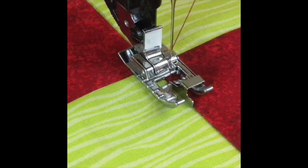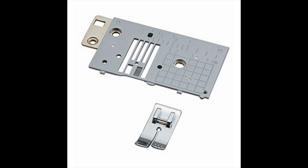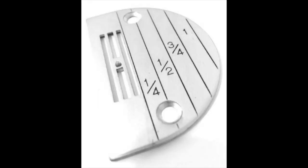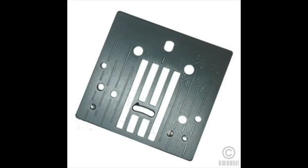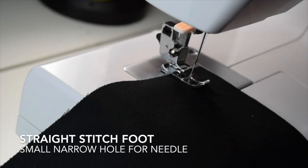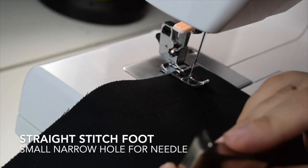First things first: this little metal plate on your sewing machine has a grid on it that's built in to help you with seam allowances, and you can use those for straight lines as well.